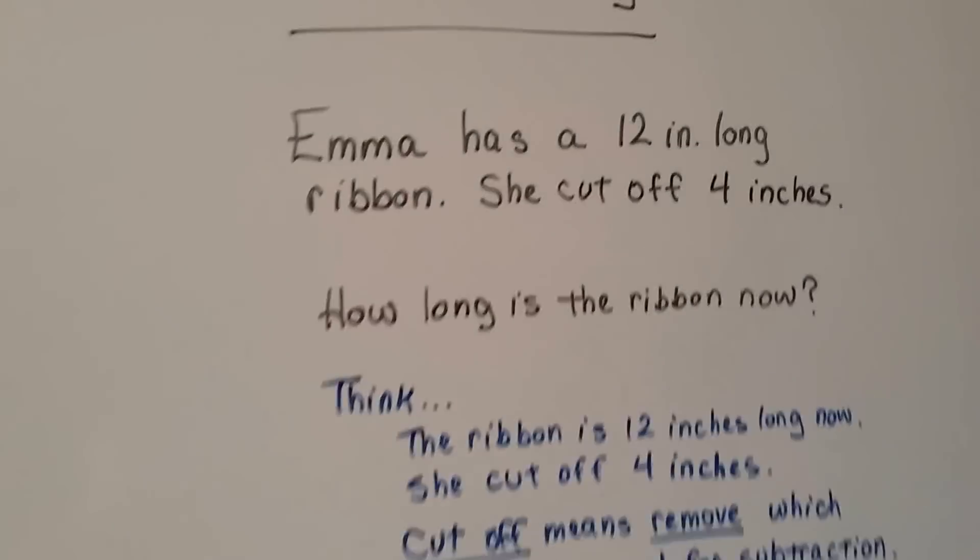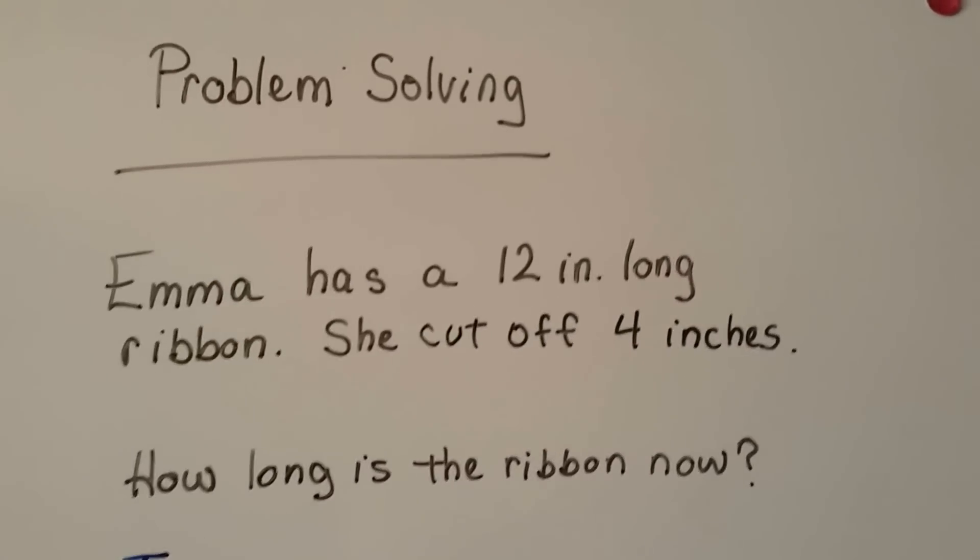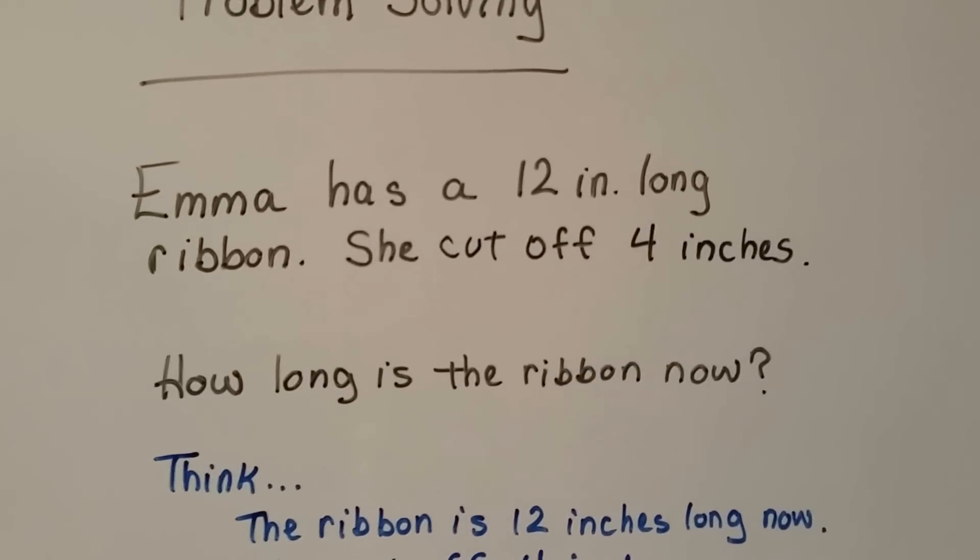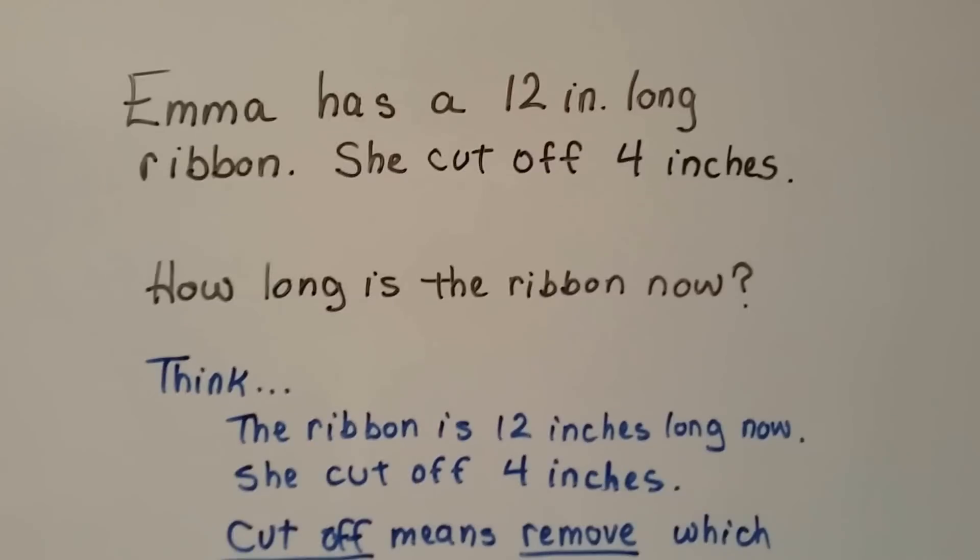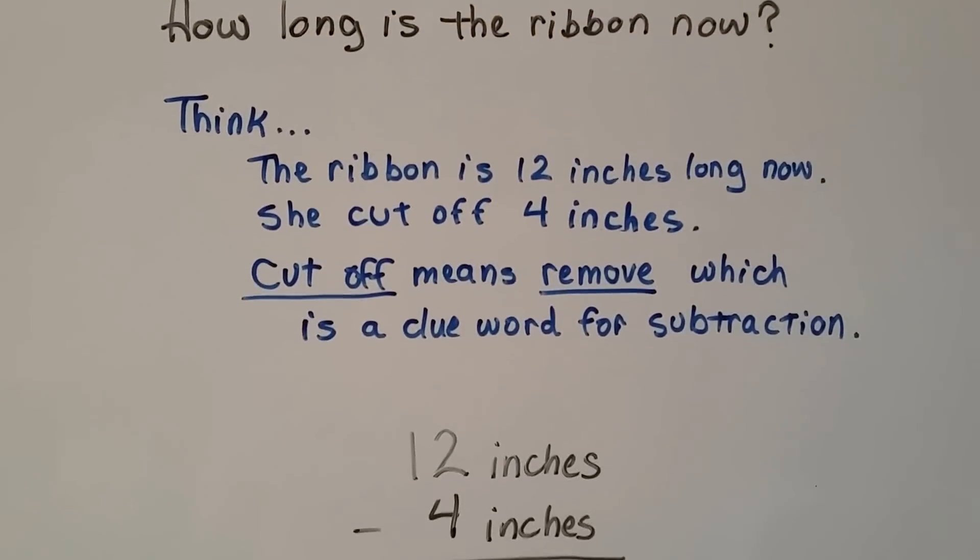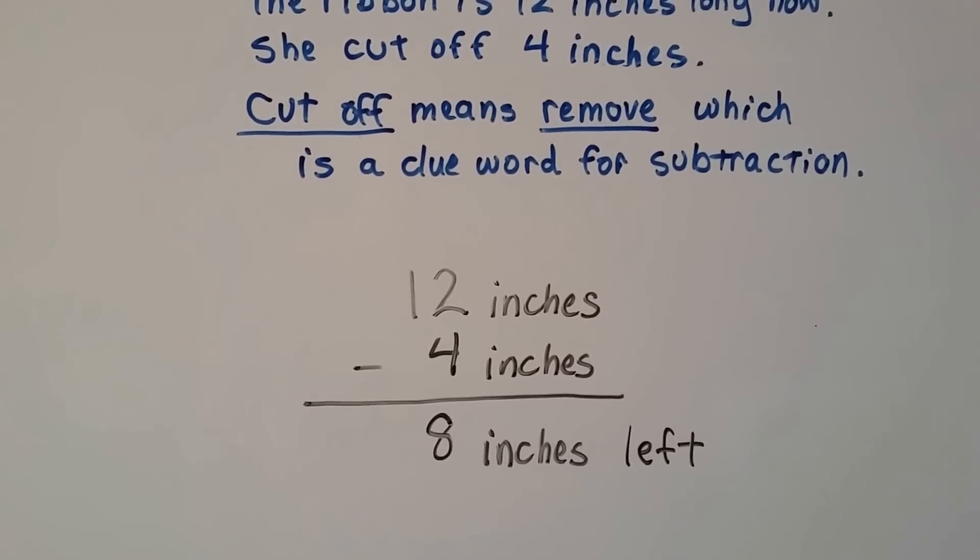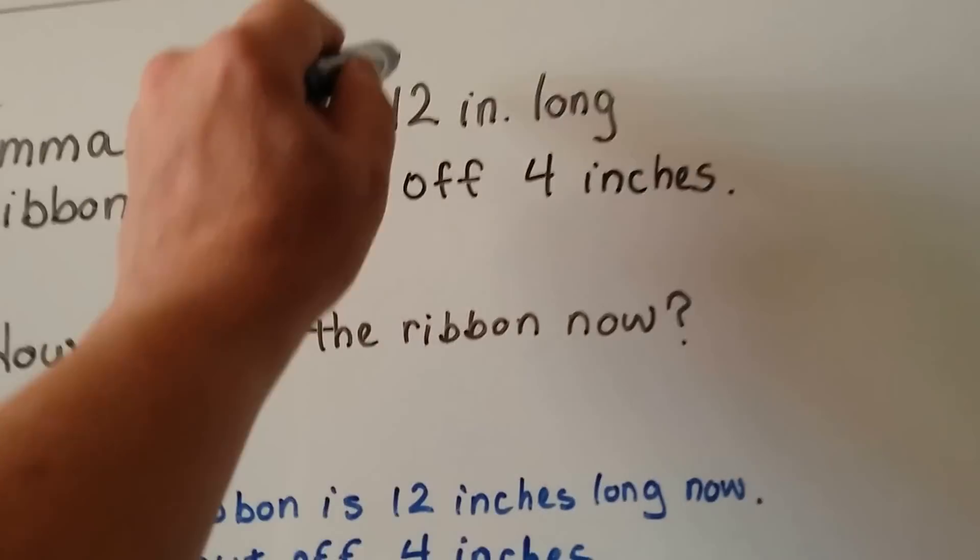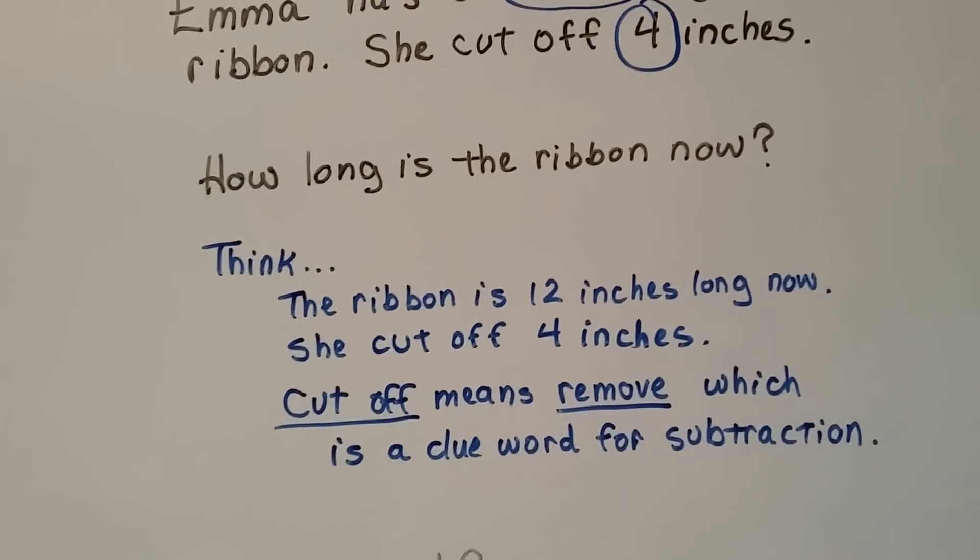Let's do some problem solving. Emma has a twelve inch long ribbon. She cut off four inches. How long is the ribbon now? So, we think the ribbon is twelve inches long. She cuts off four inches. And cut off means to remove, doesn't it? And that's a clue word for subtraction. We do twelve inches minus the four inches she cut off, and we get eight inches left. So, we look for clue words. And you can circle the important ones. It was twelve inches. She cut off four inches.